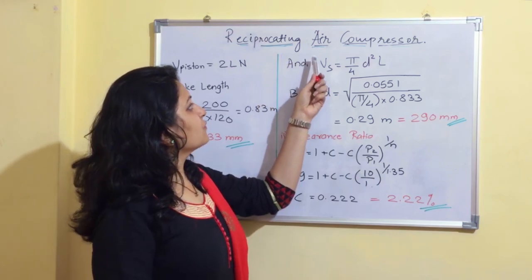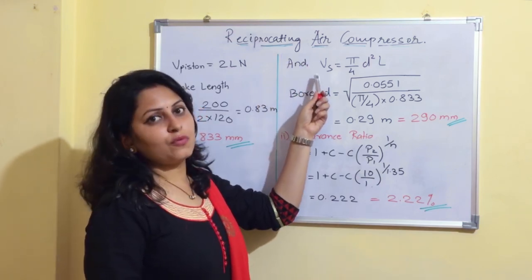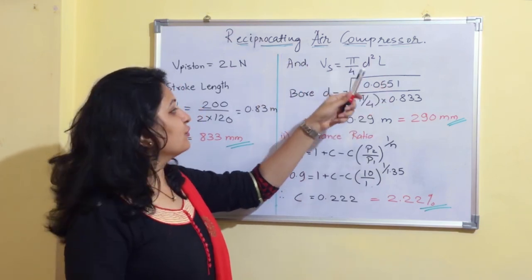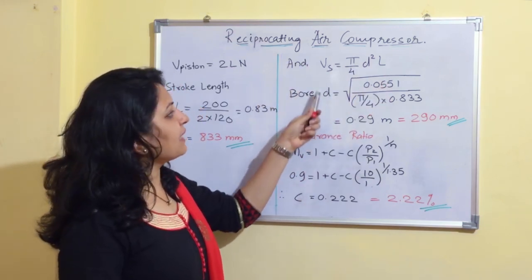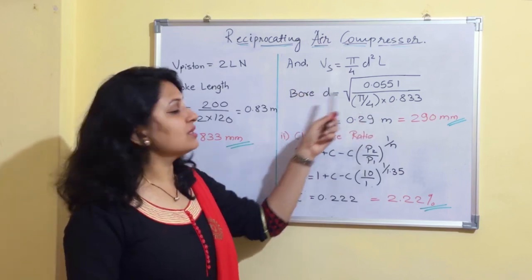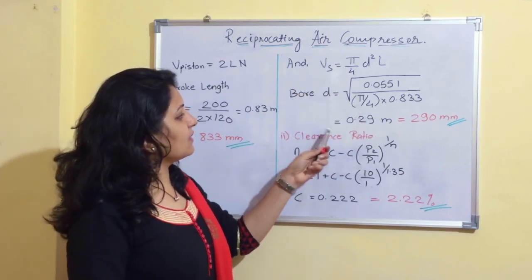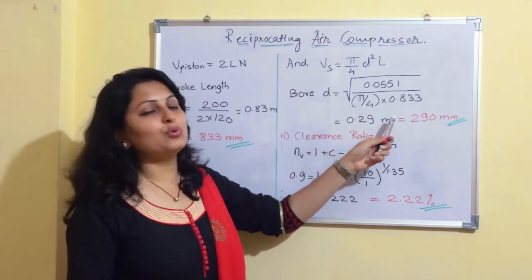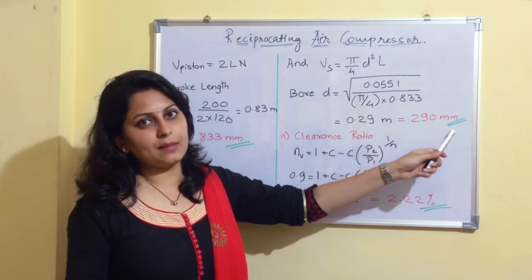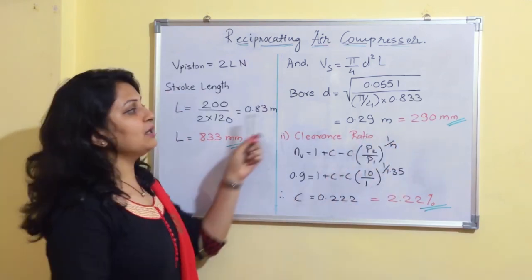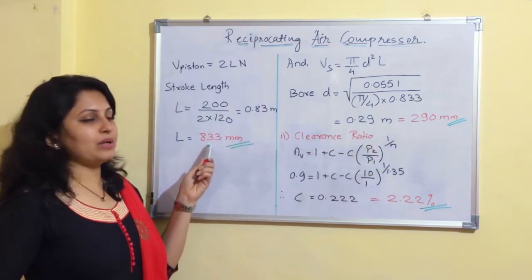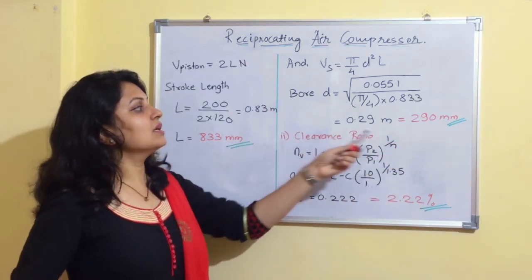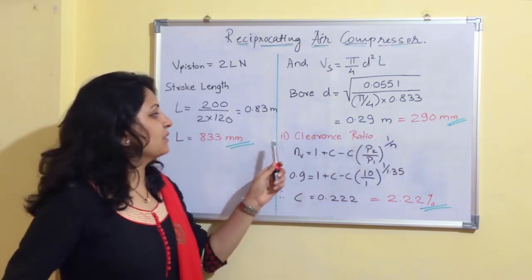Using the swept volume formula (π/4) · D² · L, and substituting all values, we get D = 0.29 m = 290 mm. So both values are: L = 833 mm and D = 290 mm.